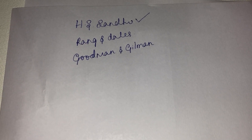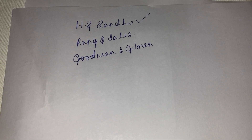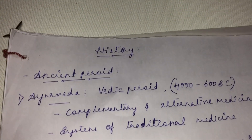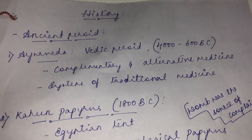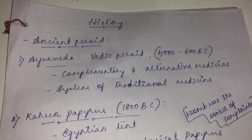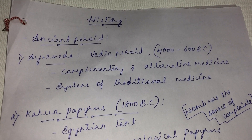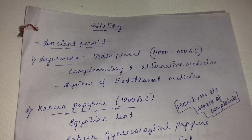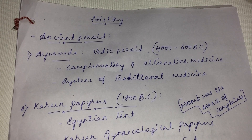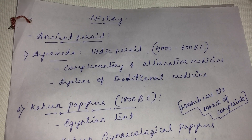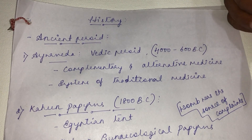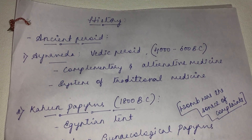Under Unit One, general pharmacology, the first chapter is the history of pharmacology — how pharmacology as a subject evolved through the ages. The history of pharmacology in a nutshell is described in two phases: one is the ancient period and another one is the modern phase.